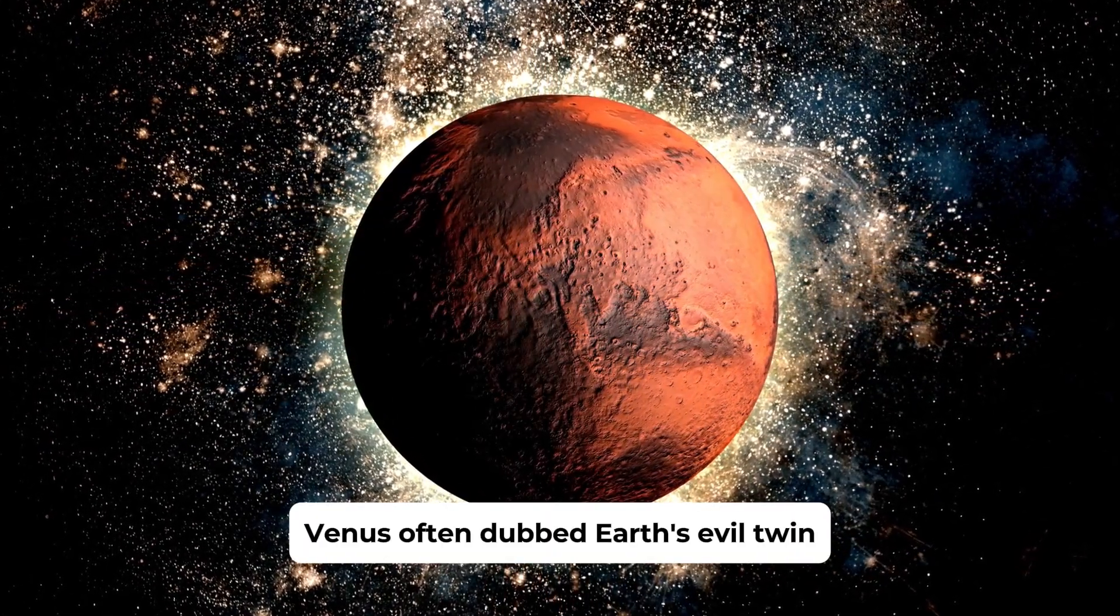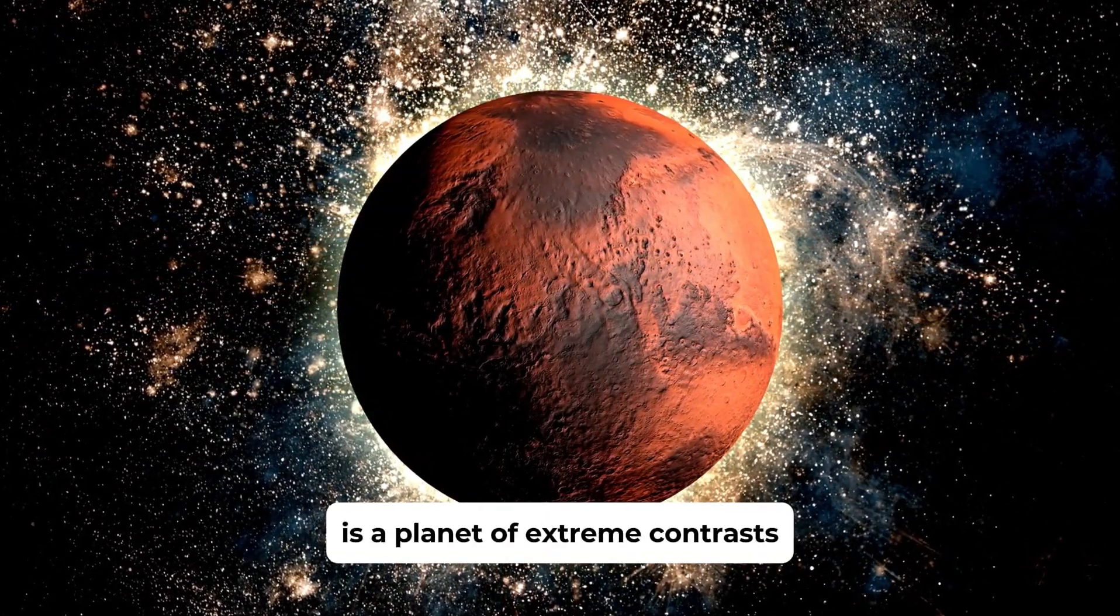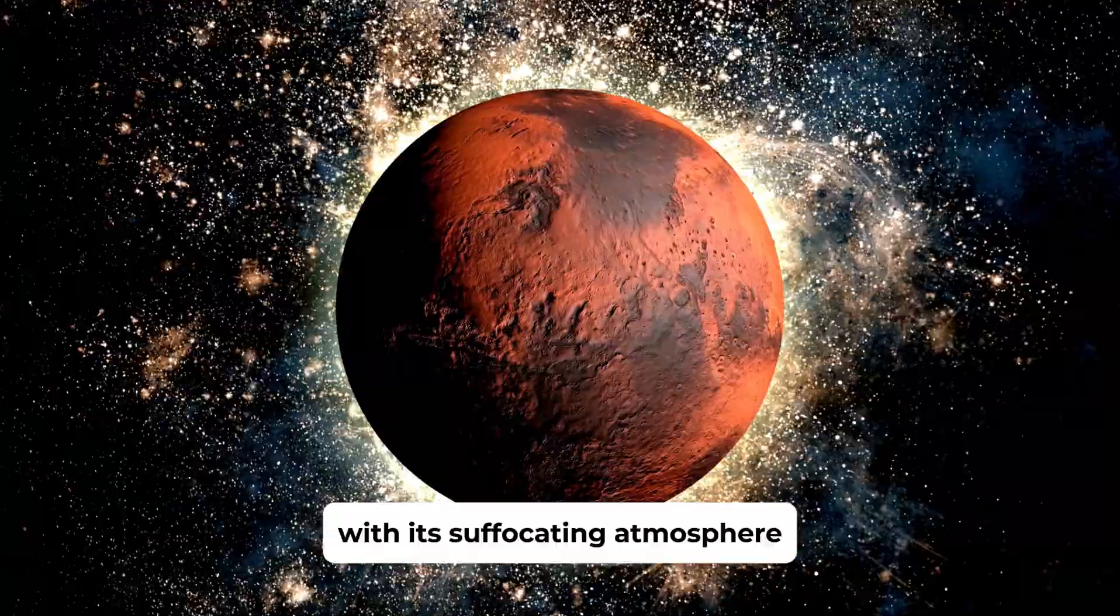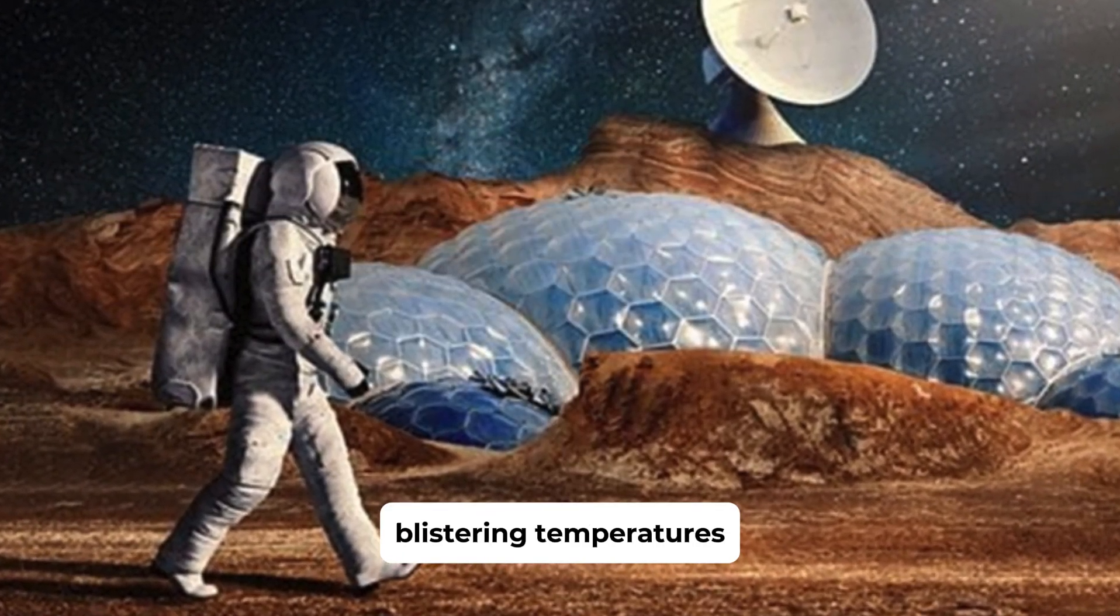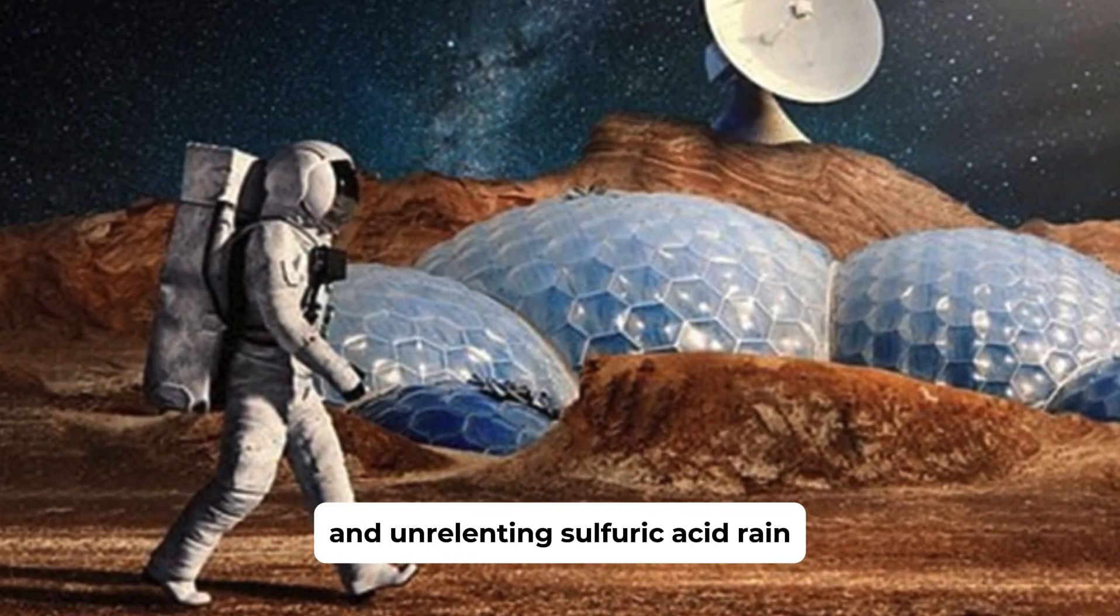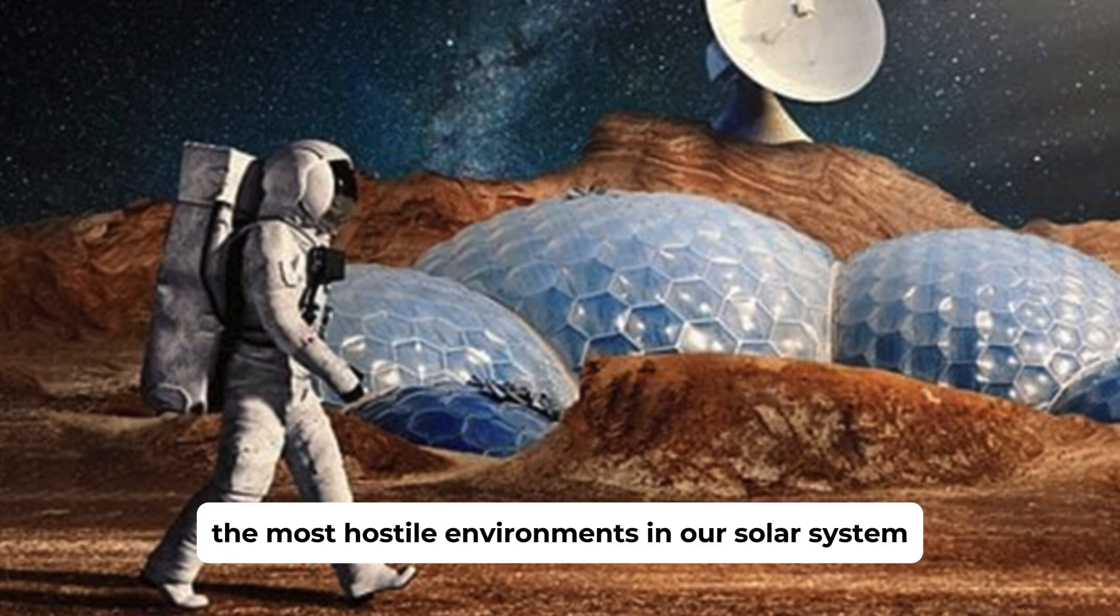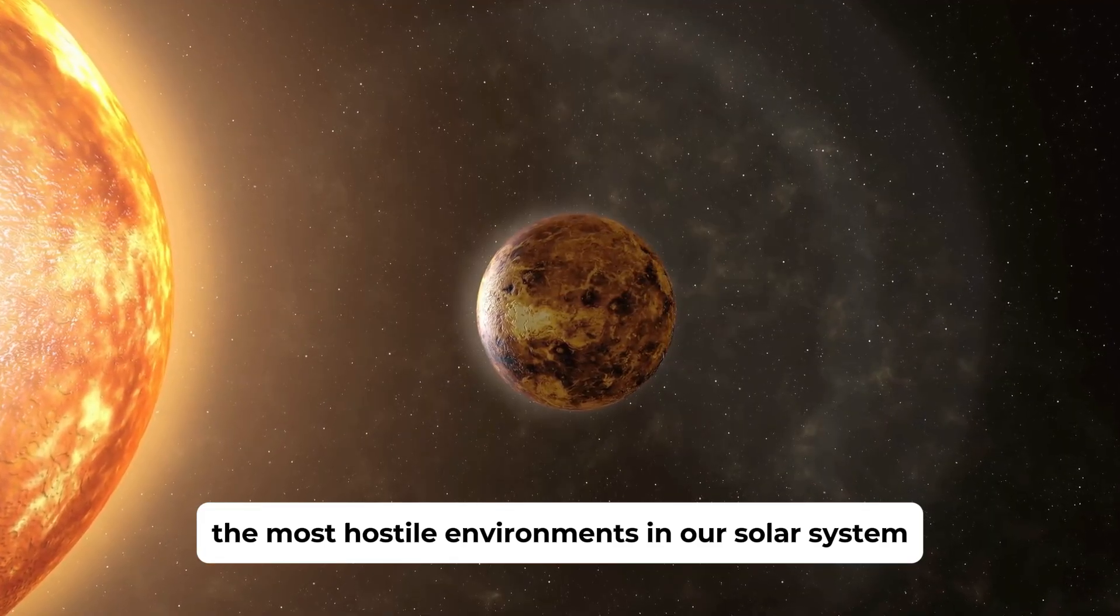Venus, often dubbed Earth's evil twin, is a planet of extreme contrasts. With its suffocating atmosphere, blistering temperatures, and unrelenting sulfuric acid rain, Venus stands as one of the most hostile environments in our solar system.